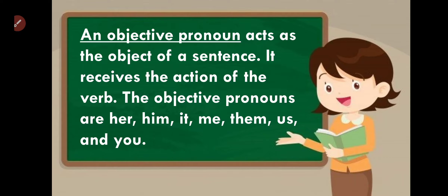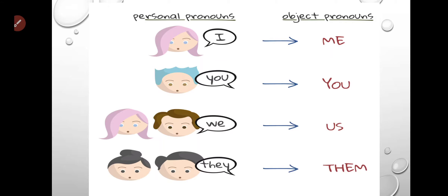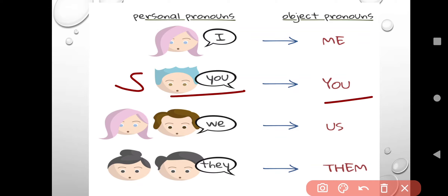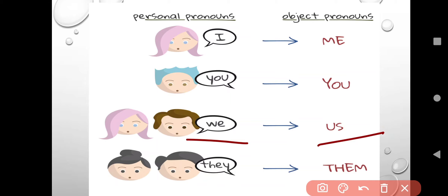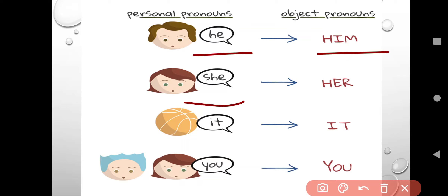The object pronouns are: her, him, it, me, them, us, and you. Always remember: whenever we have 'I' as a subject, we use 'me' as the object. When we have 'we' as the subject, we use 'us' as the object. Similarly, they→them, he→him, she→her, it→it, and you→you.